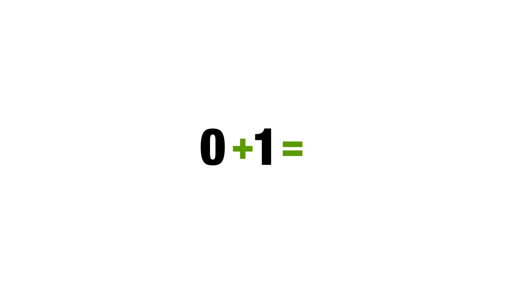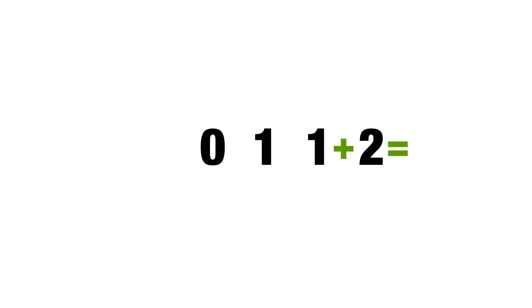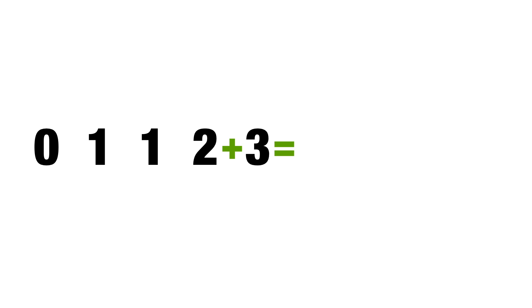Wasn't there supposed to be an episode on the Fibonacci series? I think it's time we rolled it in — actually, let's build it from scratch. The first two numbers are 0 and 1. To get the third, we add the first two together: 0 plus 1 is 1. And we carry on adding pairs of numbers. 1 plus 1 gives us 2, 1 plus 2 gives us 3, 2 plus 3 gives us 5, and so on.